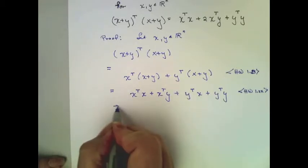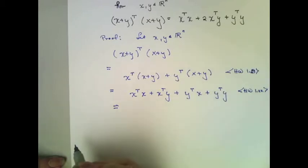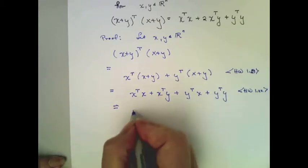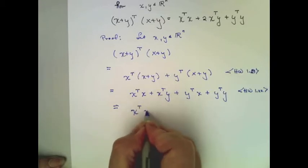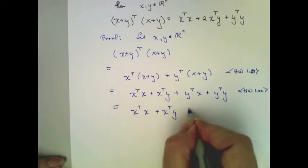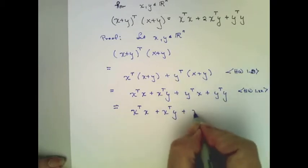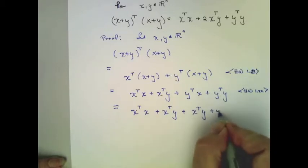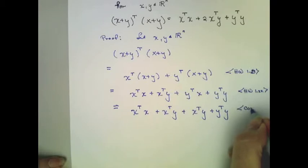But the dot product is commutative. And so this is equivalent to x transpose x plus x transpose y plus x transpose y, because y transpose x equals x transpose y by commutativity.